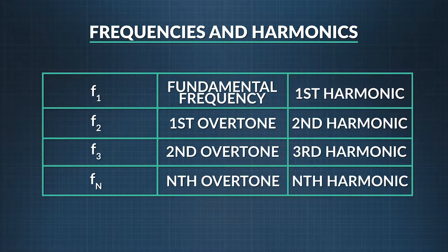The fundamental frequency is known as the first harmonic, and the harmonics above it, also known as overtones, are numbered f sub two and above.